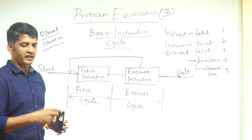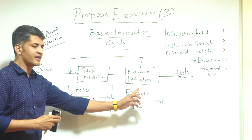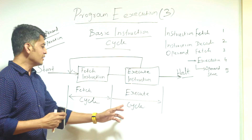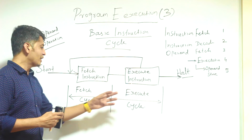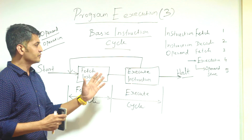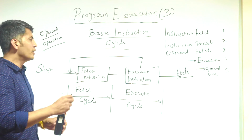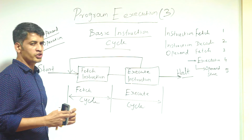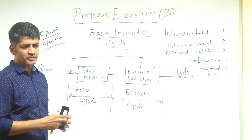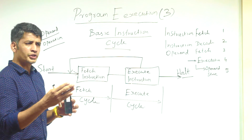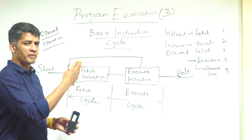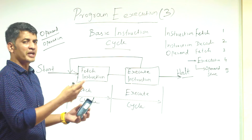The basic instruction cycle has two sub-cycles: one is the fetch cycle and the second is the execute cycle. We'll see what happens in each. A program has a number of instructions — when the user gives the command of execution, the program is transferred to memory and then from memory to the CPU, where it is executed instruction by instruction.